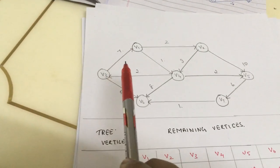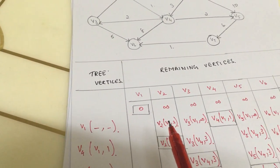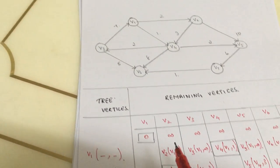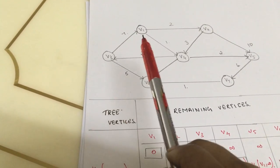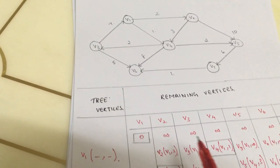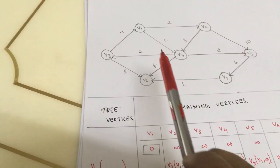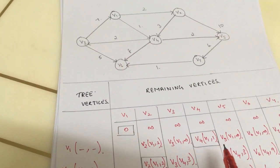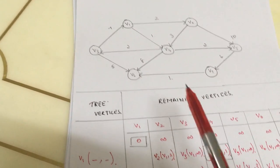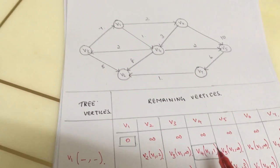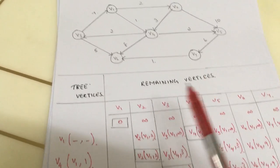From vertex v1 to v2, the cost is 2, so it is written as v2, v1, comma, 2. From v1 to v3, there is no direction, so it is written as infinity. To v4, the cost is 1, therefore written as v1, comma, 1. For v5, there is no direction, so it is infinity. Same way, v6 is infinity and v7 is infinity as well.